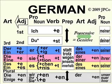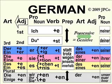Notice that the adjectives after the genitive always end in EN. The possessive pronouns become meiner, deiner, seiner, ihre, seiner, unser, euer, ihr — if you want to be formal.